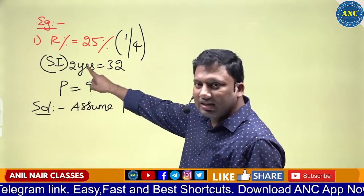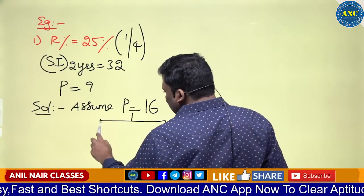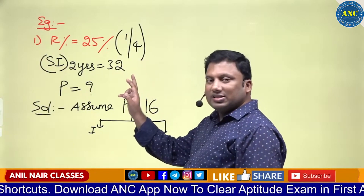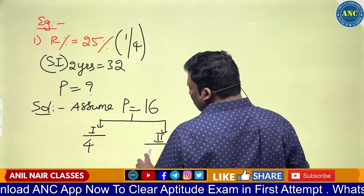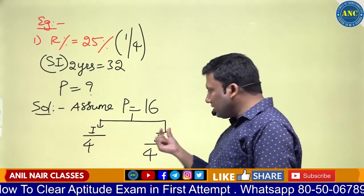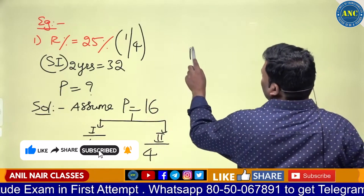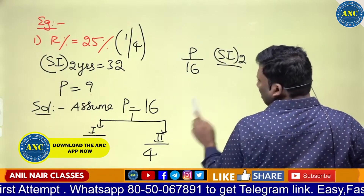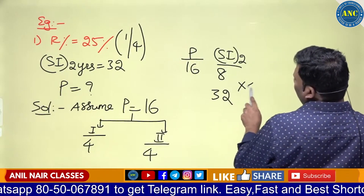Assume principal equivalent to 4 squared, which is 16. In case of SI, interest remains the same every year. First year: one-fourth of 16 is 4. Second year: one-fourth of 16 is also 4. Total SI for two years is 4 plus 4 equals 8. But according to the question, it is 32. Eight fours are 32, so sixteen fours are 64. Therefore, the principal is 64.